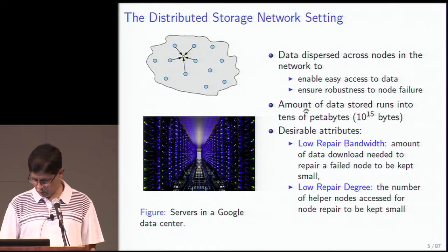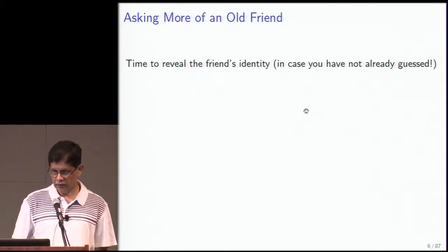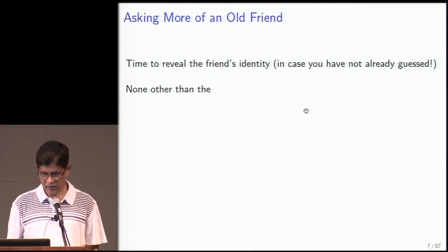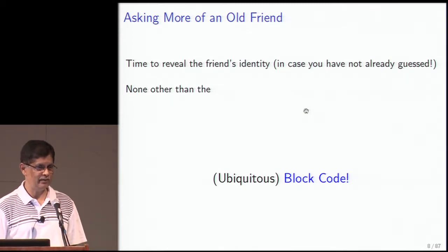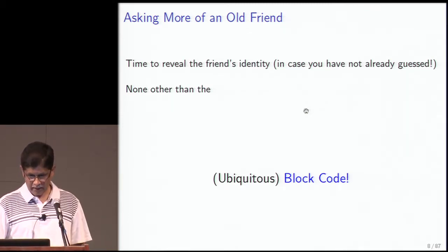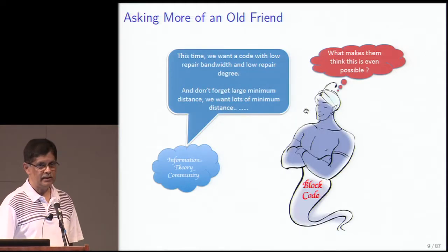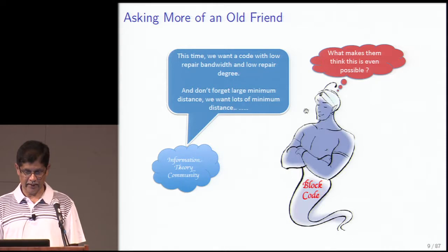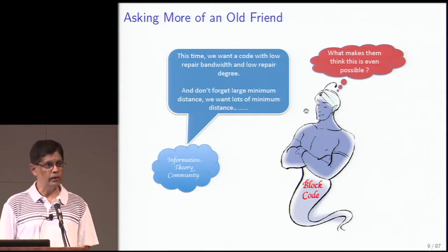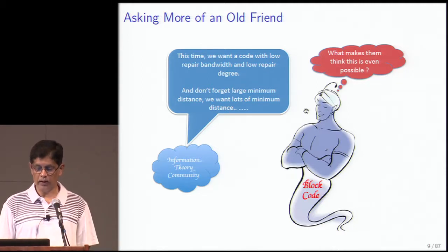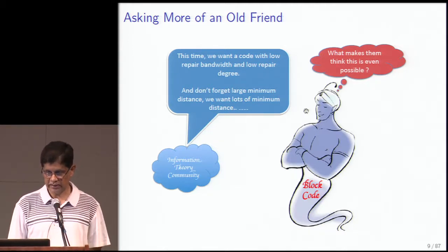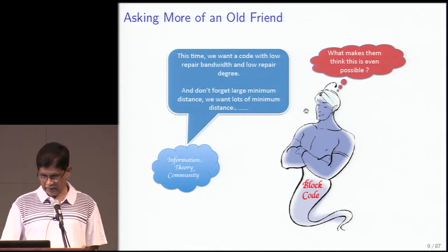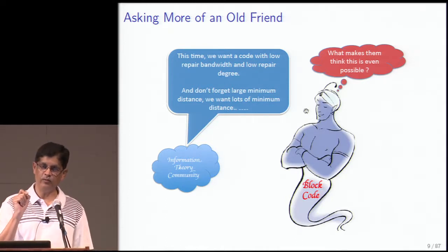The title asked about asking more of an old friend, and that friend is none other than the ubiquitous block code. Over the years the block code has served the information theory community very well, enabling us to overcome noise and fading. But this time we want something more than minimum distance for dimension — we want a code that has the attributes data storage needs: low repair bandwidth and low repair degree, on top of minimum distance.